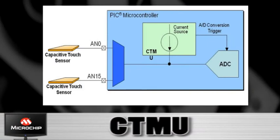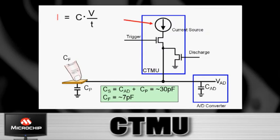Another method we can use is a peripheral called the charge time measurement unit, or CTMU. If you remember basic capacitors: if you run a fixed current into a capacitor for a period of time, the voltage ramps up on the capacitor — it's a function of the capacitance value. What we do with the CTMU is run a regulated current in for a very fixed period of time and then do an A-to-D conversion on the voltage across the capacitor. Then, as we scan through all the different channels, we look for a change in that level that indicates a touch by the user.